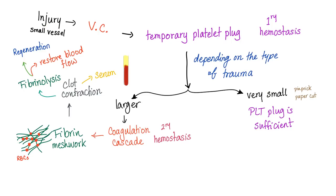You injure yourself. Vasoconstriction occurs, which is the first step, then temporary platelet plug — this is called primary hemostasis. Depending on the type of trauma, if it's very small, primary hemostasis is sufficient. If it's larger, we need the coagulation cascade, also known as secondary hemostasis, to lay down its fibrin meshwork, trapping the red blood cells, then the clot contracts, producing serum. Fibrinolysis occurs to restore blood flow and then regenerate the tissue.